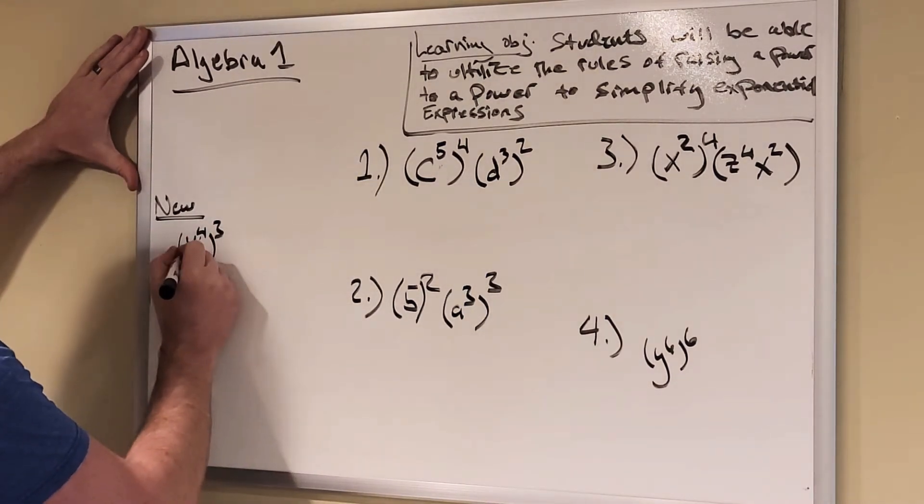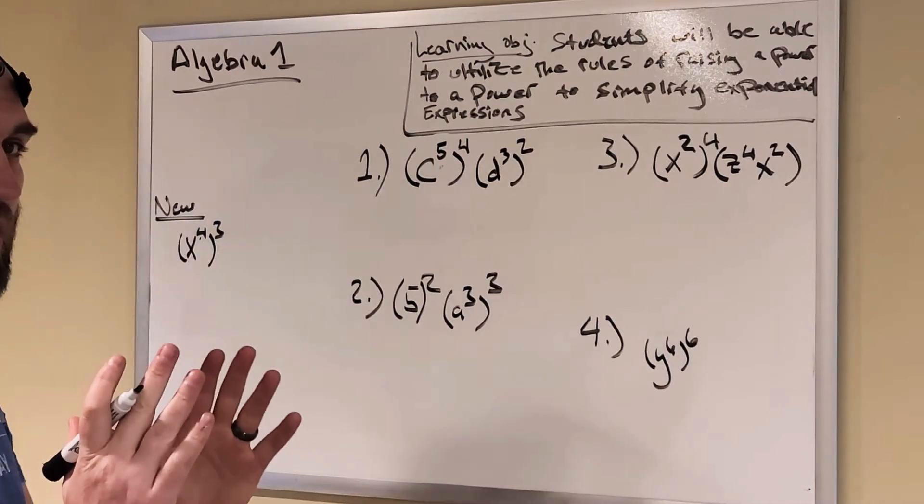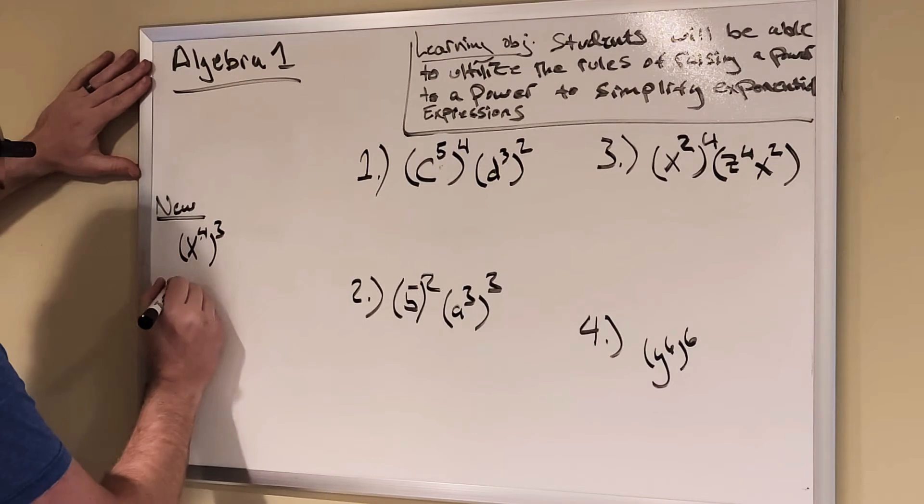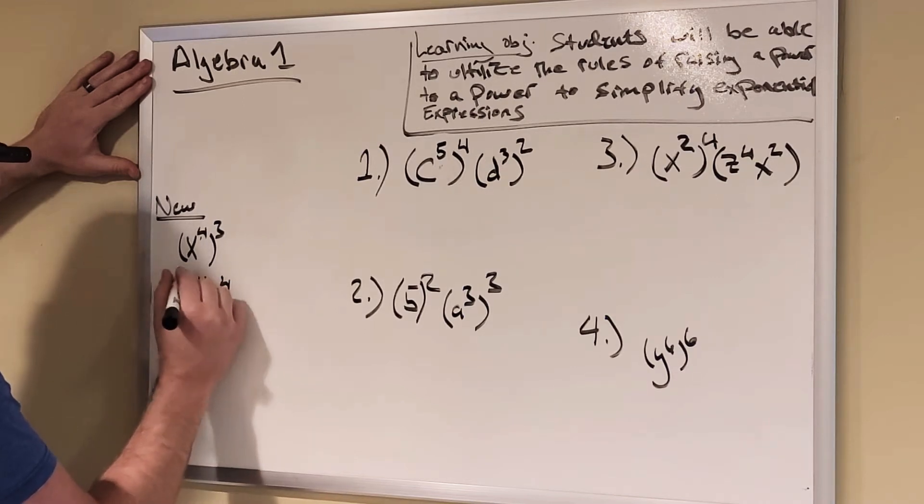So I can break down x to the fourth to the third power. I'm basically taking x to the fourth and multiplying it by itself three times. So it's x to the fourth, x to the fourth, times x to the fourth.